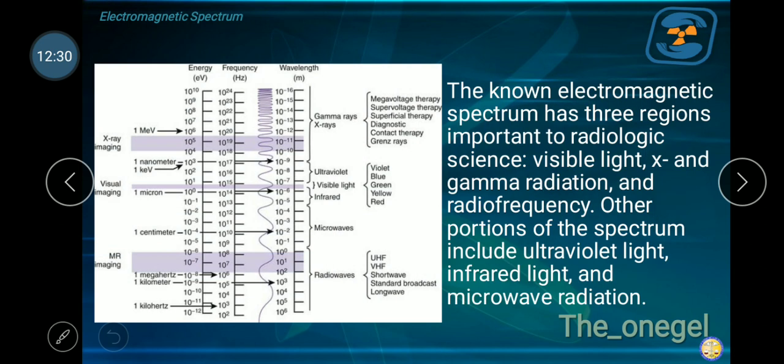The known electromagnetic spectrum has three regions important to radiologic science: visible light, X and gamma radiation, and radio frequency. Other portions of the electromagnetic spectrum include ultraviolet light, infrared light, and microwave radiation. Let's get to know the components of the electromagnetic radiation.